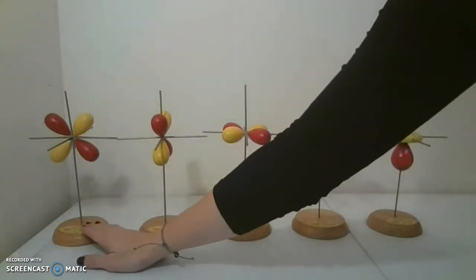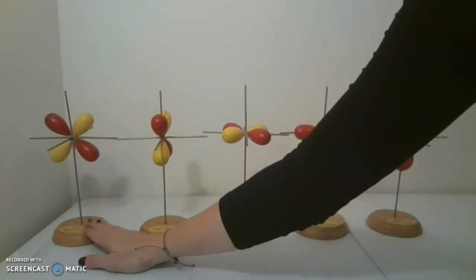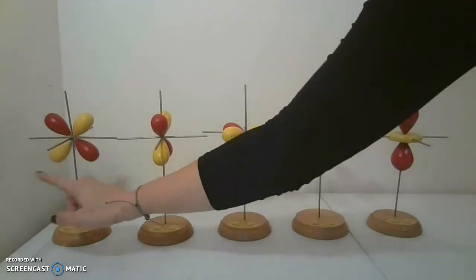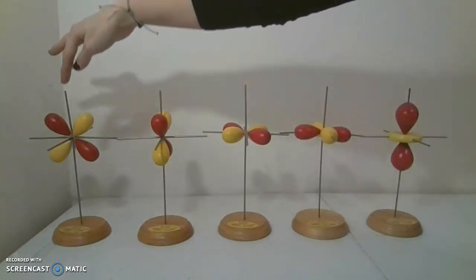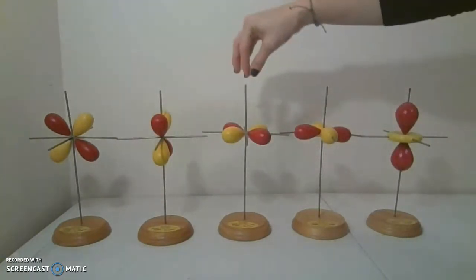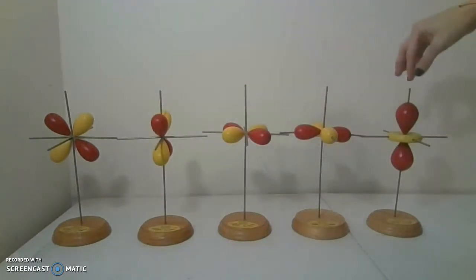So what you see this shape called is the double dumbbell. It looks a lot like the p-orbital that we had, but it's doubled. There are five different types of double dumbbells that Schrodinger found in his calculations.